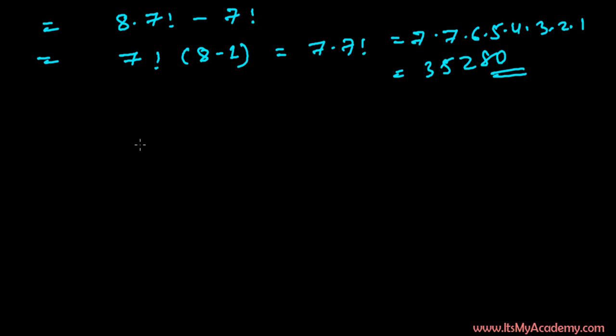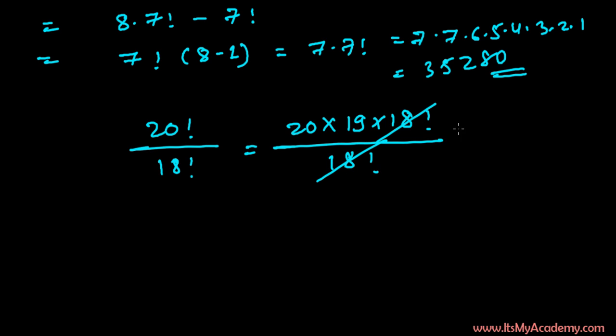Now let's solve something like 20 factorial over 18 factorial. To solve this, you just write 20 factorial as 20 times 19 times 18 factorial, then 18 factorial cancels, and 20 times 19 equals 380.